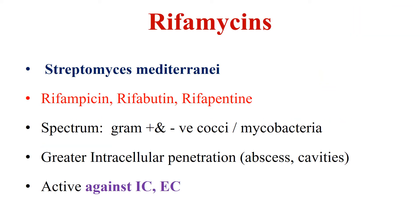Next is rifamycins. We have three members: rifampicin, rifabutin, and rifapentine. Rifampicin is the most tuberculocidal agent, so it is a first-line drug. Rifampicin is a semi-synthetic derivative of rifamycin B obtained from Streptomyces mediterranei. Its spectrum of activity includes certain gram-positive as well as gram-negative cocci and mycobacteria like tuberculosis and leprosy.